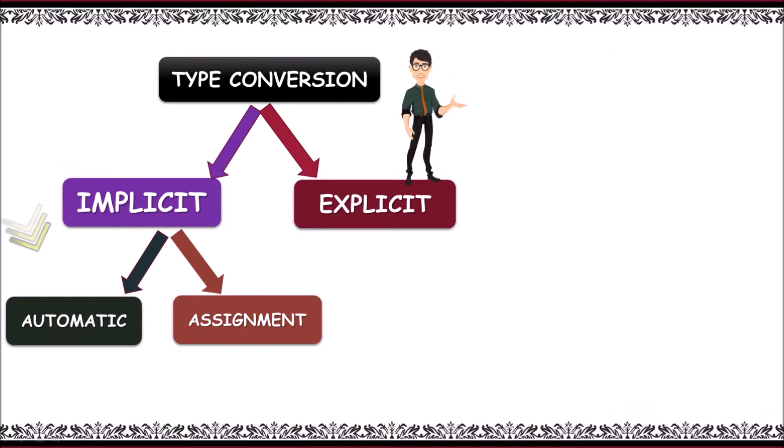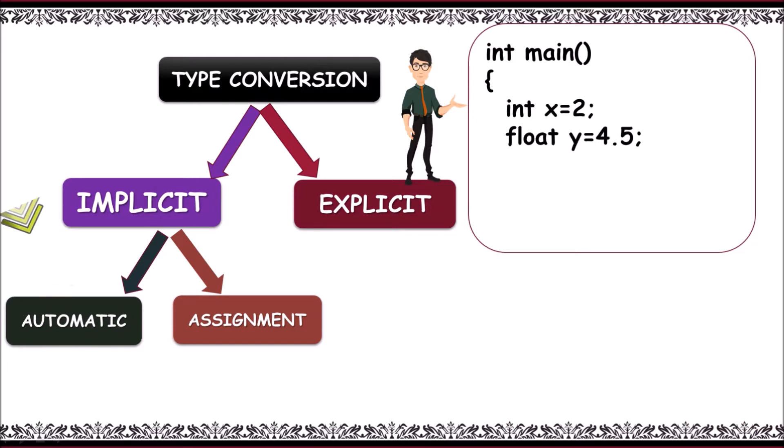Now, for automatic type conversion, let's take the help of this program. Here, int x is equal to 2 and float y is equal to 4.5. On addition, z is equal to x plus y, prints 6.5000.